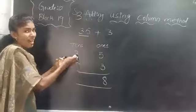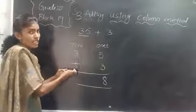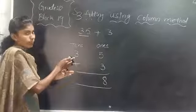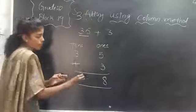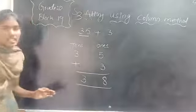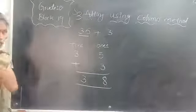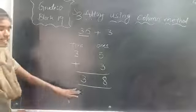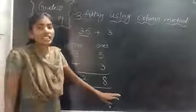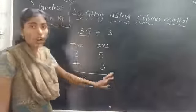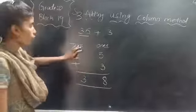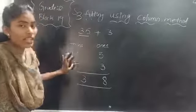Do we have anything to add in the 10s place? No. We have only 3 in the 10s place. So that number you write as it is in the 10s place value. So the answer here is 38. You have to draw the place values first, then arrange the numbers according to their place values.